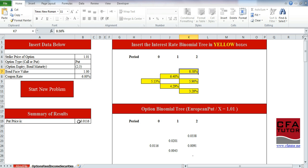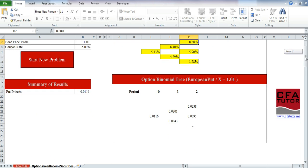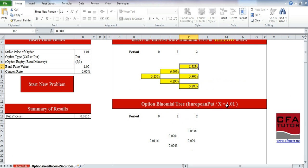It's telling you that the put price in this case would be 0.0116, and we have all the information about the option binomial tree over here. It's a European put, and this is the strike price. These are the values over different periods.